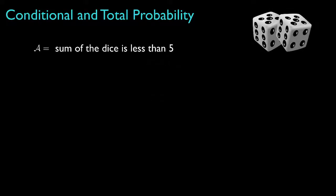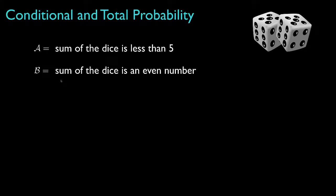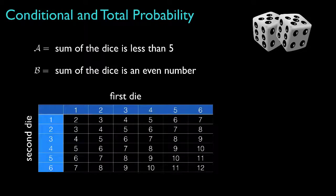As an example, let's suppose we roll two six-sided dice. Event A might be that the sum of the dice is less than five, and event B might be that the sum of the dice is an even number. This table shows all the possible sums we can get, which are integers ranging from two to twelve based on the result for the first and the second die.